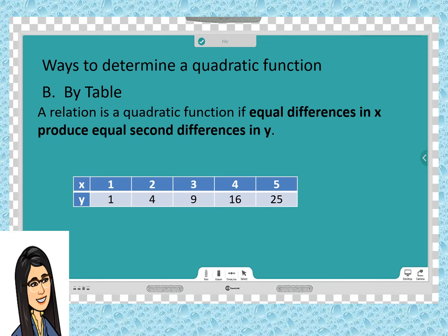The x values range from 1 to 5, and y values are 1, 4, 9, 16, and 25. If we are going to get the differences in x: 2 - 1 = 1, 3 - 2 = 1, 4 - 3 = 1, and 5 - 4 = 1. Observe that we have equal first differences in x.